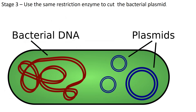We've got a bacterium here with a bacterial plasmid — this ring of DNA is separate from the main chromosomal DNA and can replicate independently. Our next step is to use that same EcoR1 restriction enzyme to chop this plasmid open.